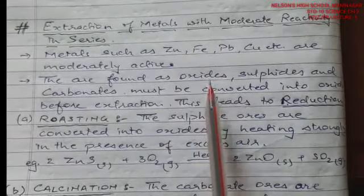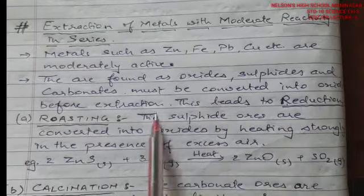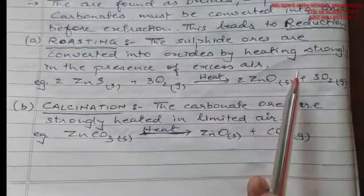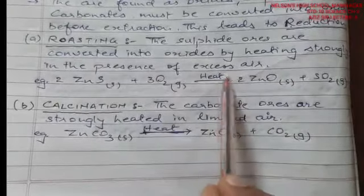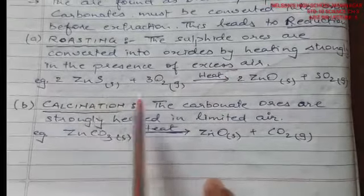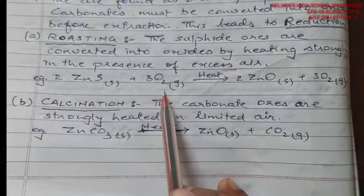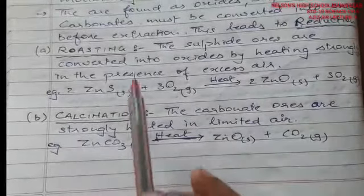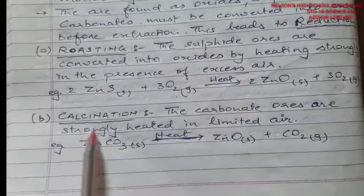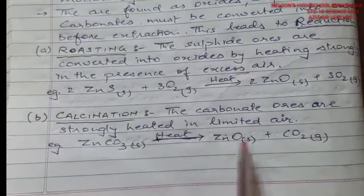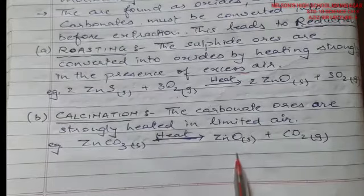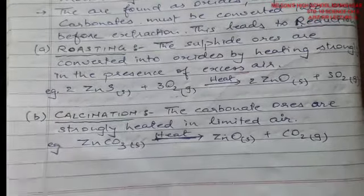For moderately reacting elements — zinc, iron, lead, copper, etc. — there are three ore types: oxides, sulphides, and carbonates. They can be converted by the reduction process. First is roasting: sulphides are converted into oxides by heating strongly in the presence of excess air. For example, zinc sulphide heated with excess oxygen turns to zinc oxide and sulphur dioxide gas is liberated. Second is calcination: carbonate ores are strongly heated in limited air. For example, zinc carbonate heated with limited oxygen forms zinc oxide and carbon dioxide.